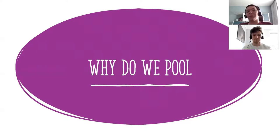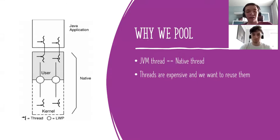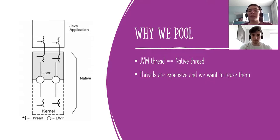Why do we need thread pools? To answer that, we should revisit the basics of the Java threading model. As stated in the JDK specification, the most common threading model — the one we use in all our applications — is called one-to-one threading. Every JVM thread is actually just a thin wrapper around an OS thread, a native thread. That makes the threads we create in the JVM precious resources. An OS thread is very memory expensive, and if we create too many, we'll get an OutOfMemoryException.